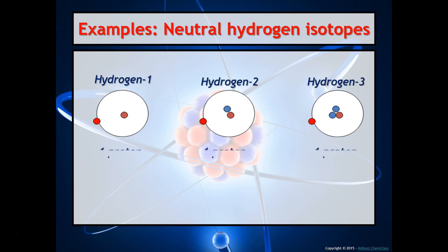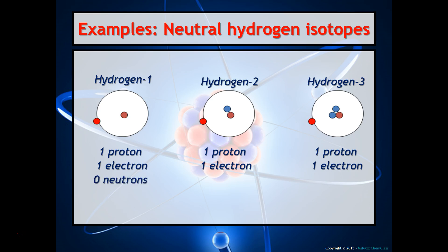Every single one of these models has one proton and one electron, because they are neutral. Hydrogen-1 has zero neutrons — you can see it has no blue. Hydrogen-2 has one neutron, and hydrogen-3 has two neutrons. So for isotopes, only the number of neutrons will vary. The number shown (1, 2, or 3) is the sum of the particles in the nucleus — that is the mass number.